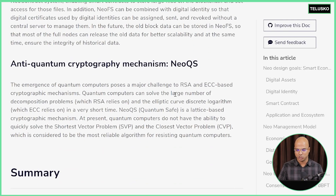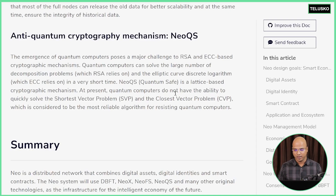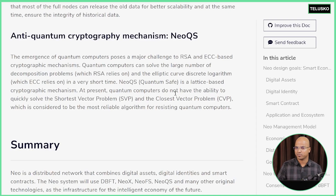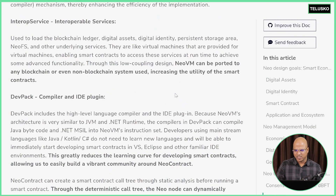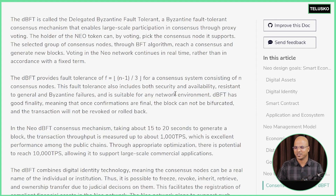That's the NEO white paper in short, where we talked about different terms. We talked about DBFT, we talked about NEO X which is cross-chain, and NeoFS for file storage. For anti-quantum cryptography we have NeoQS. I hope you got some ideas — once we start with the programming it will make much more sense. That's it from this video, I hope you enjoyed it. Let me know in the comment section and do subscribe for the videos.